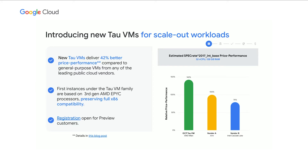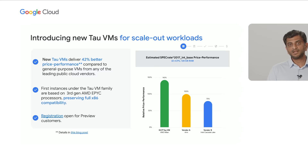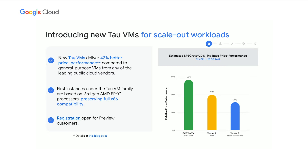We tested our Tau VMs against competitive options from leading clouds, and we've achieved a price point that's 42% better in price performance than anything else from a leading cloud — including VMs with Intel, AMD, or ARM processors. With Tau VMs, we've achieved the leading price-performance point using AMD VMs, meaning your developers don't have to port from an x86 application to ARM and can still achieve this price performance. Tau VMs are in preview, and we are open for registration now.